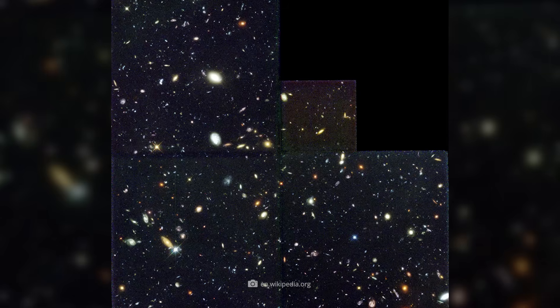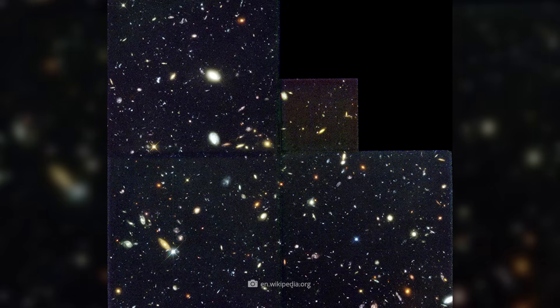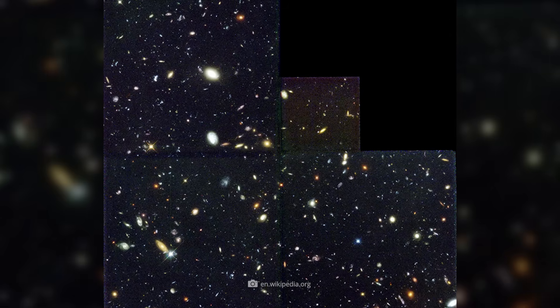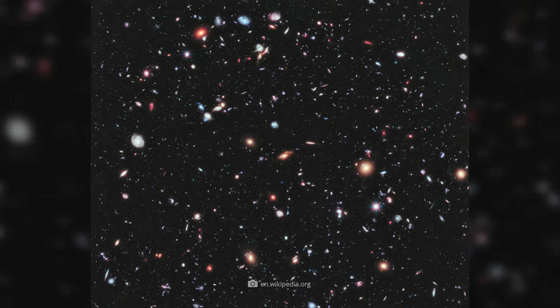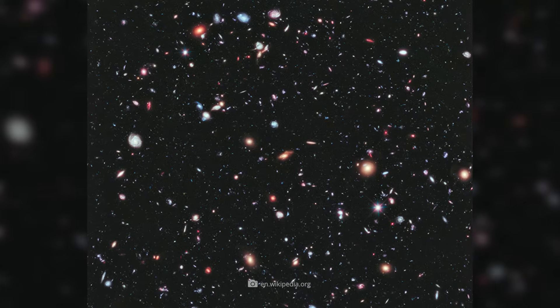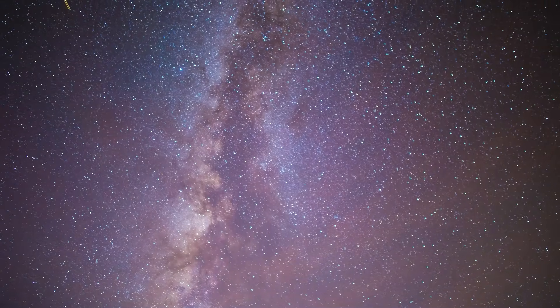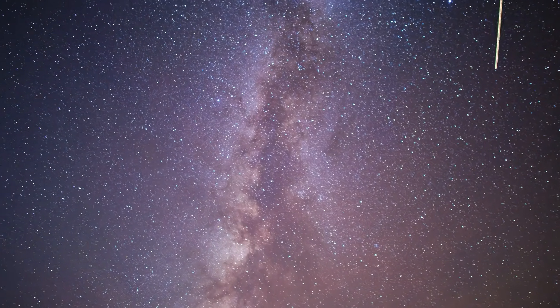The Hubble Ultra Deep Field from 2004 shows over 10,000 galaxies. Its successor was the Hubble Extreme Deep Field in 2010. The deepest image at the time already showed signs of galaxies from a time only 500 million years after the Big Bang.